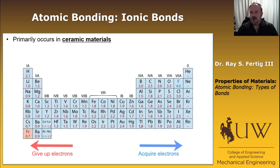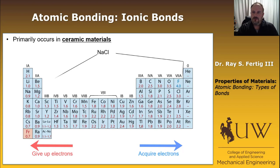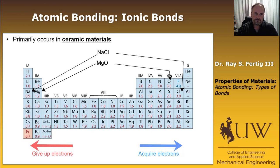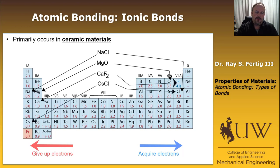You're going to primarily find ionic bonds in ceramic materials. One example is NaCl — sodium chloride, which we know as salt — a ceramic material. Another is magnesium oxide, MgO. In all these cases, you see a large difference in electronegativities. For NaCl, the electronegativity for sodium is 0.9 and for chlorine is 3.0. Other examples include calcium fluoride and cesium chloride — all examples of ceramic materials with ionic bonding.